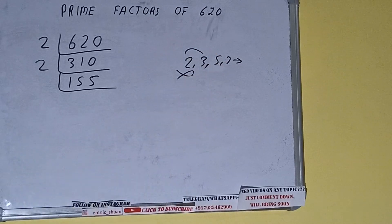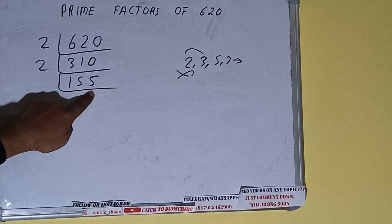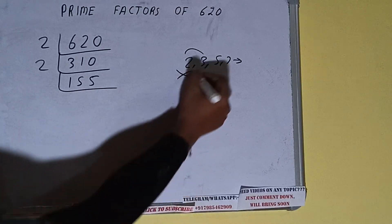So we'll check with the next lowest prime number, that is 3. 1 plus 5 plus 5 equals 11, 1 plus 1 equals 2. It is not divisible by 3 also.